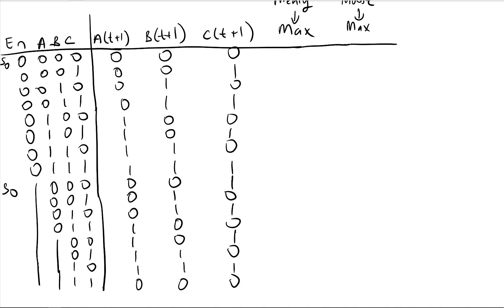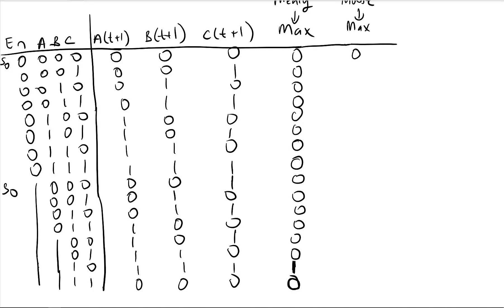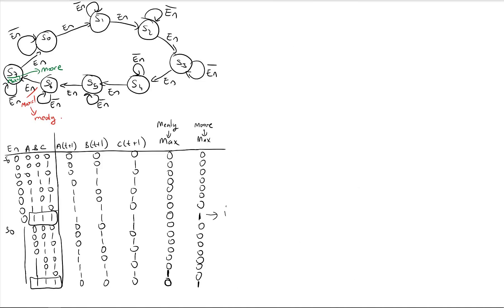For the Mealy max output: when enable is 0, max is 0. The only place max becomes 1 is when I am in s6 and enable is 1. For the Moore max output, it does not depend on the input — it only depends on the state. Whenever the state is s7, max is 1. Note that the Moore output is 1 in two rows and the Mealy output is only 1 in a single row, because the Moore output does not depend on the input.